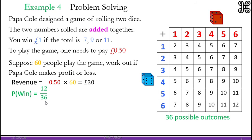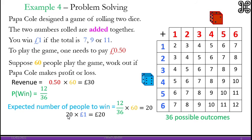If 60 people are playing, think of relative frequency or the experimental probability. If the chance of winning is 12 out of 36 and 60 people are playing, how many do you expect to win? You multiply probability by the number of people who are playing. So we expect 20 people to win.